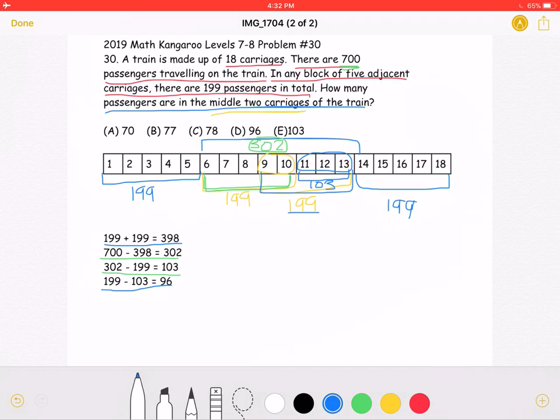This means that these 2 carriages, 9 and 10, which is 96, plus 103, would be equal to the total for the 5, which is 199. This means that the answer must be 96, which is answer choice D.